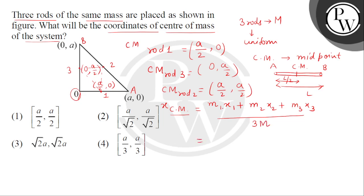Now, we can put the values. Ismein M1, M2, M3. Tino hi M hai. Toh M will be common divided by 3M. Now, we will be adding all x coordinates.